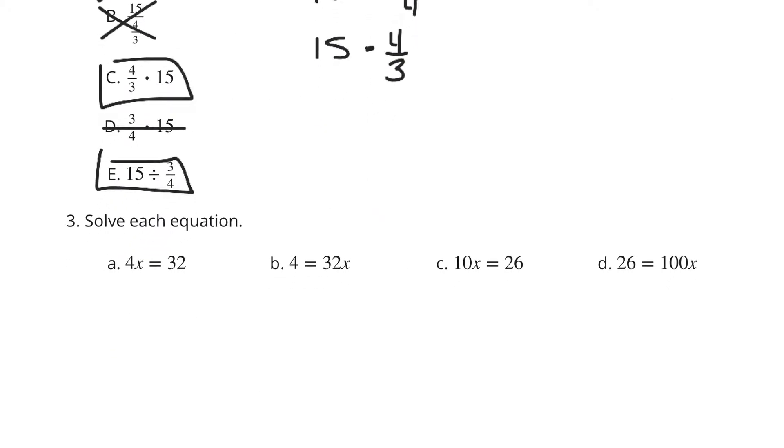And now in question 3, we're looking to solve each equation. In A, we have 4 times x equals 32. If I simply divide by 4 on both sides here, you'll get x equals 8. Which makes sense, because 4 times 8 does equal 32.